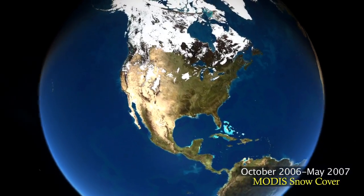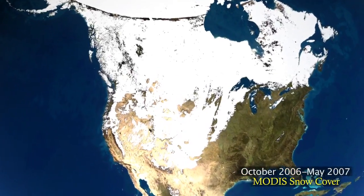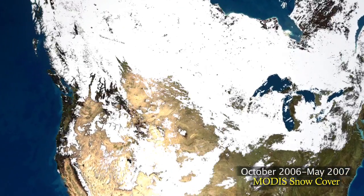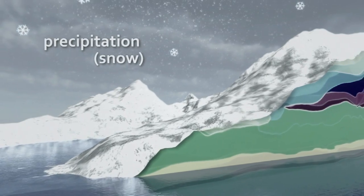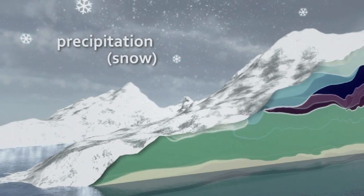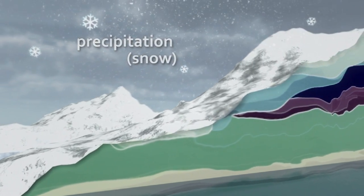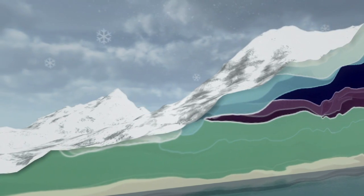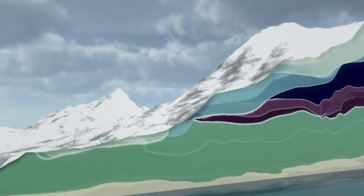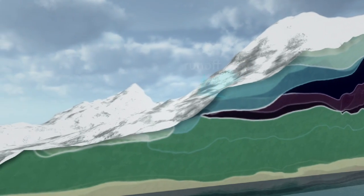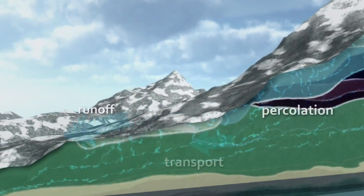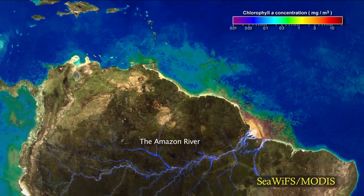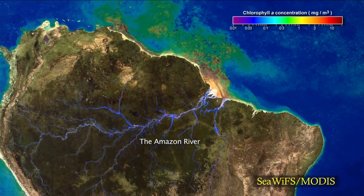Most of the water that falls onto land remains stored there for weeks or more. Snowfall is stored as snowpack or ice. Meltwater and rainfall are stored in lakes and soils. Some of the water is absorbed by plant roots or drains into the water table. Eventually, the water will evaporate to the atmosphere or return to the ocean in streams and rivers, providing a source of nutrient-rich water that supports ocean life.